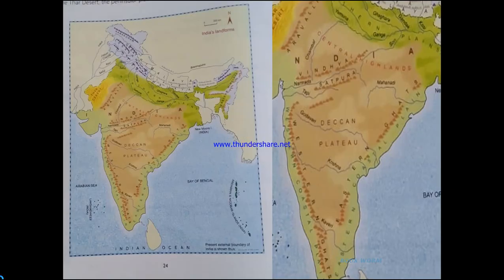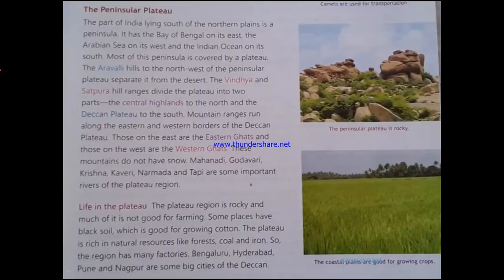Now let's move on to the next part — the plateau region, or the Deccan Plateau. In the map, see this brown triangular section — this is the Deccan Plateau region. The color divisions in the map are very important to keep in mind, as we need to follow these color combinations when doing the map work.